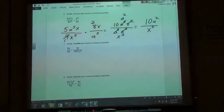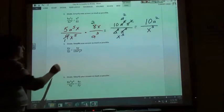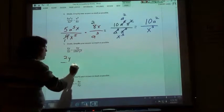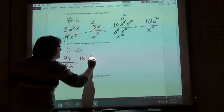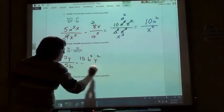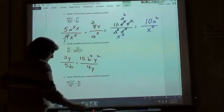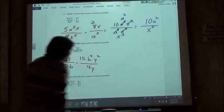Number 5 then. Again, we're dividing fractions. Whenever there's a dividing, we're going to invert that second fraction and multiply. So, 2y over 5b times 15b to the 5th y squared over 4y. And what can we do with that?